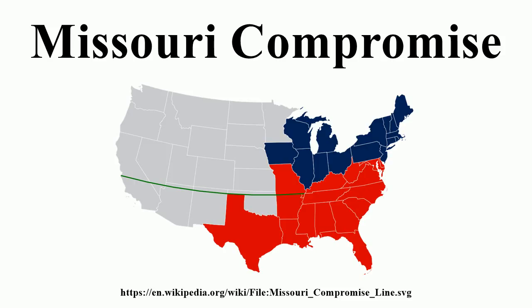During the following session, the House passed a similar bill with an amendment introduced on January 26, 1820, by John W. Taylor of New York, allowing Missouri into the Union as a slave state. The question had been complicated by the admission in December of Alabama, a slave state, making the number of slave and free states equal. In addition, there was a bill in passage through the House to admit Maine as a free state. The Senate decided to connect the two measures.